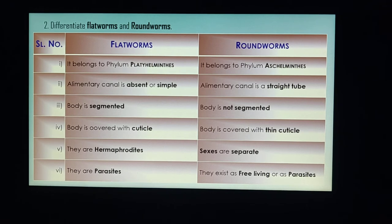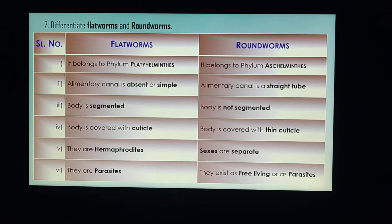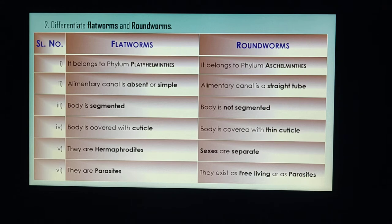In flat worms, the alimentary canal is absent or sometimes very simple, whereas in round worms it is a straight tube. The alimentary canal is the digestive tract, starting from mouth to anus — wherever the food passes through.